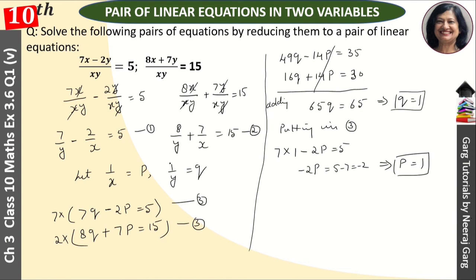Now, p we had let equal to 1 upon x, and q was let equal to 1 upon y. So when we put 1 for p, 1 upon x equals 1 means x equals 1. When we put q equals 1, 1 upon y equals 1 means y equals 1.